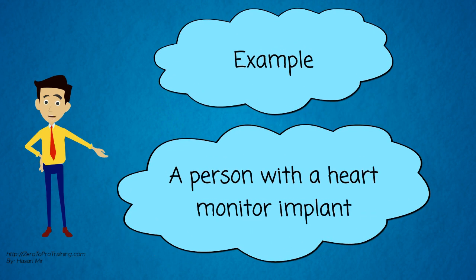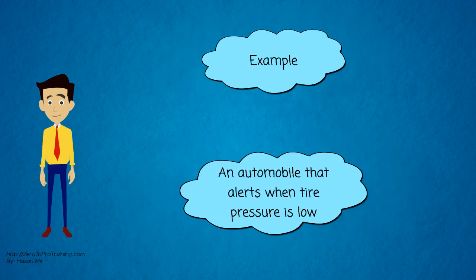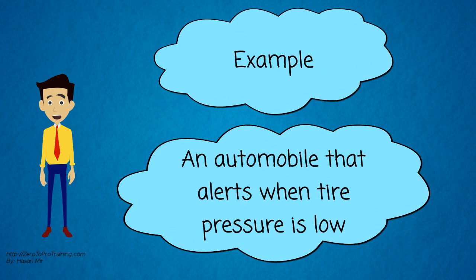An example of a thing in the Internet of Things is a person with a heart monitor implant, or a farm animal with a biochip transponder, or an automobile that has built-in sensors to alert the driver when tire pressure is low.